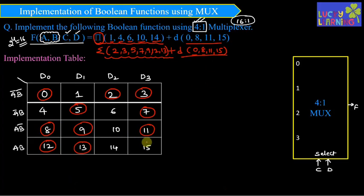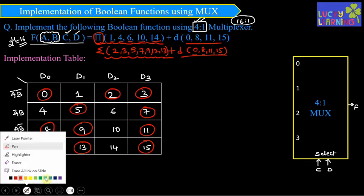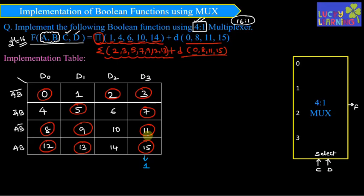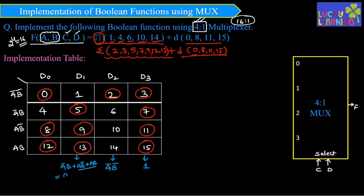Now determine the data inputs. D3 should be 1 because all min terms in that group are circled. For data input D2, only min term 2 is circled, which is represented by row A'B'. For D1, it represents A'B + AB' + AB. Taking A common: A'B + A simplifies, and A + A'B equals A + B according to the fundamental theorems of Boolean algebra.